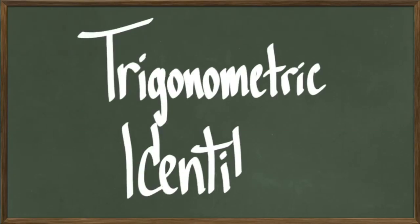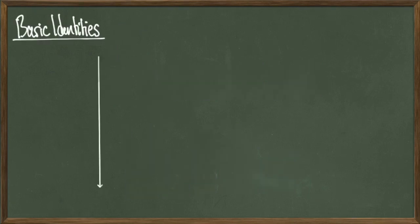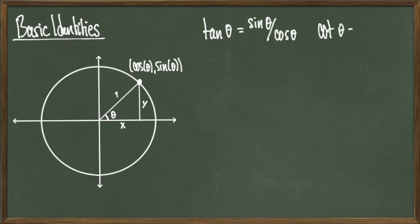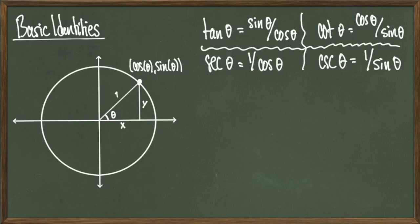Hey everyone, today we're going to be talking about trigonometric identities. The whole point of this video is to realize known trig functions as combinations of other ones. So let's start off with the basic identities that we already know: tan of theta equals sine of theta over cosine of theta, cotangent of theta equals cosine of theta over sine of theta, secant of theta equals 1 over cosine of theta, and cosecant of theta equals 1 over sine of theta.